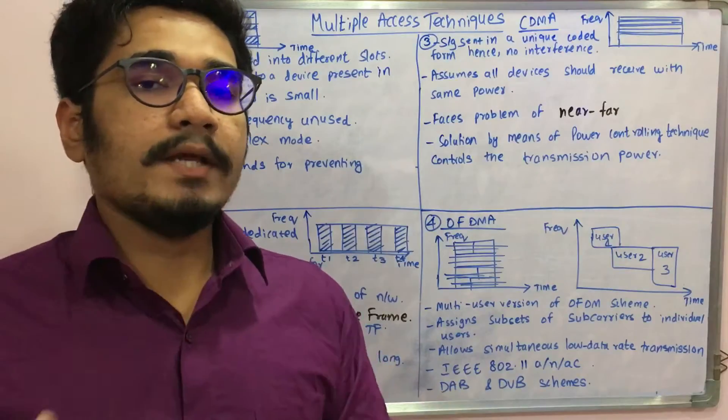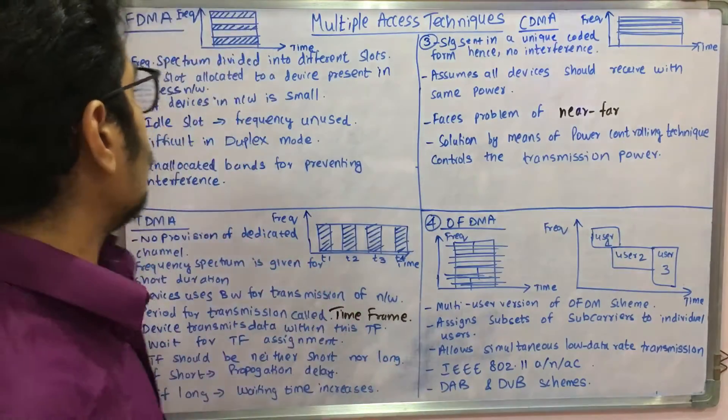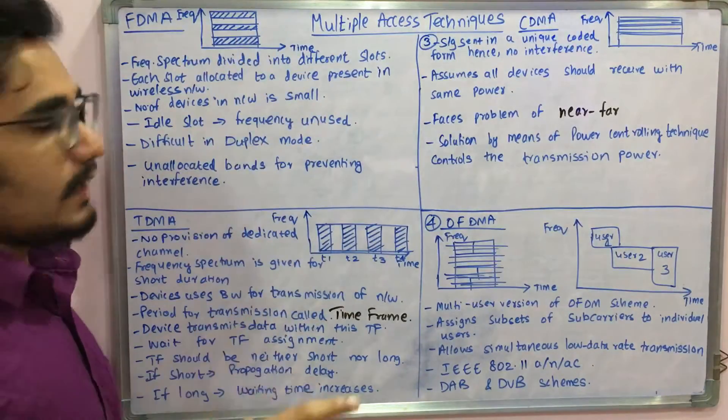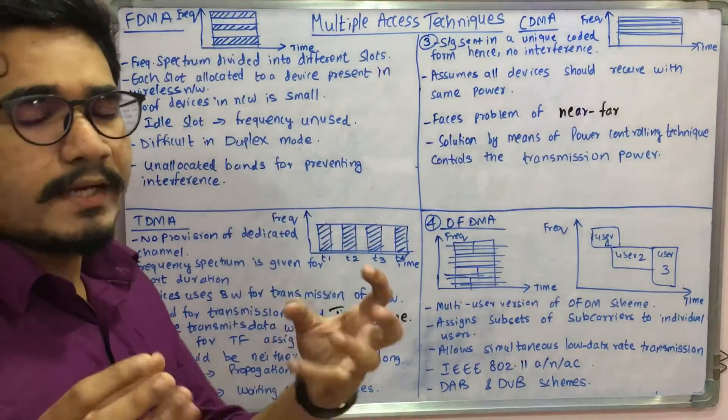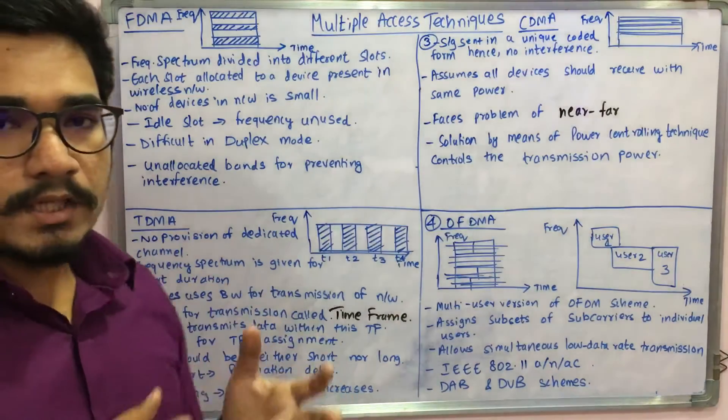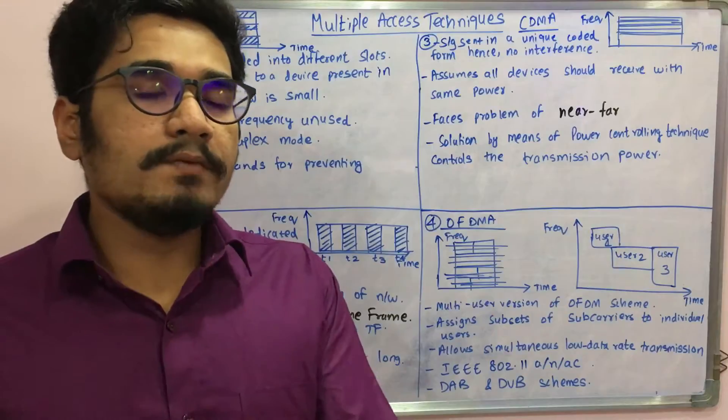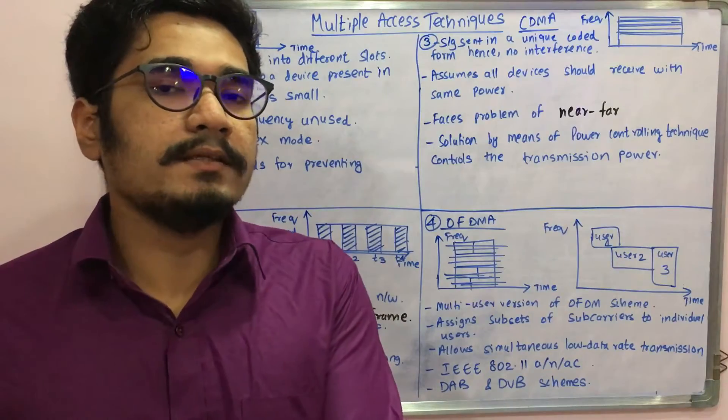Each device is assigned different frequency depending on the division they have been given and the number of devices. These techniques work for devices if they are small in number. If there are a larger number of devices, there may be some which have already been assigned some frequency slots.